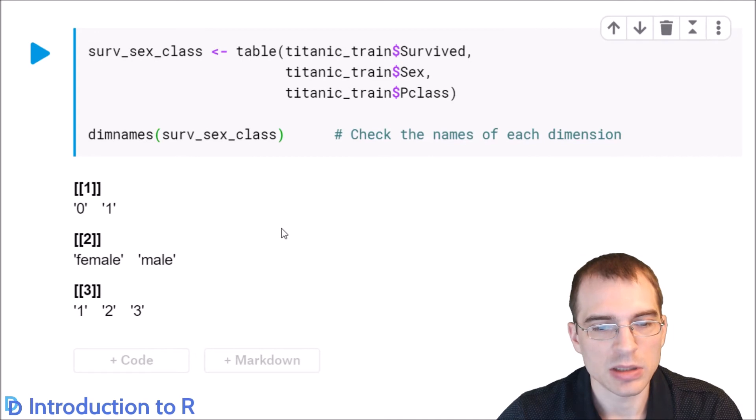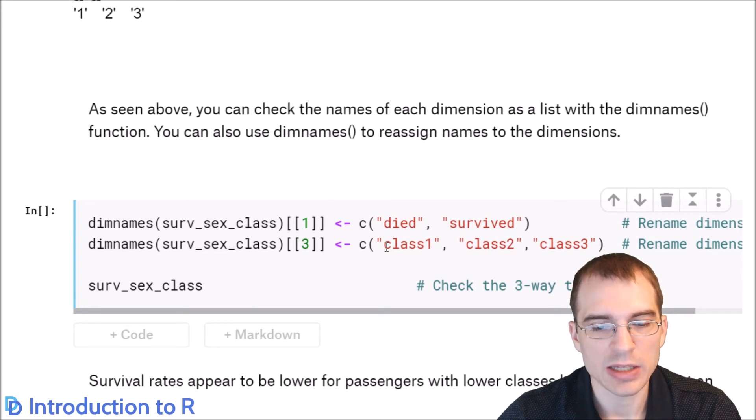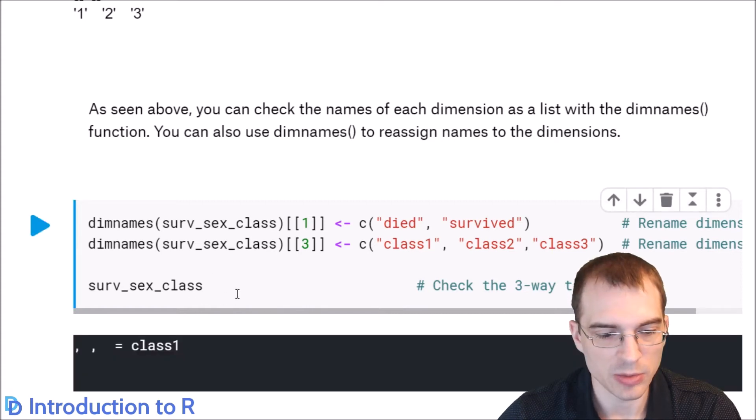So below, we're just going to rename those to things that are easier to interpret, and then we'll look at the output of the table. So we'll rename the classes, class 1, 2, and 3. We'll rename survived, died, and survived again, and then we'll just look at the three-way table here.